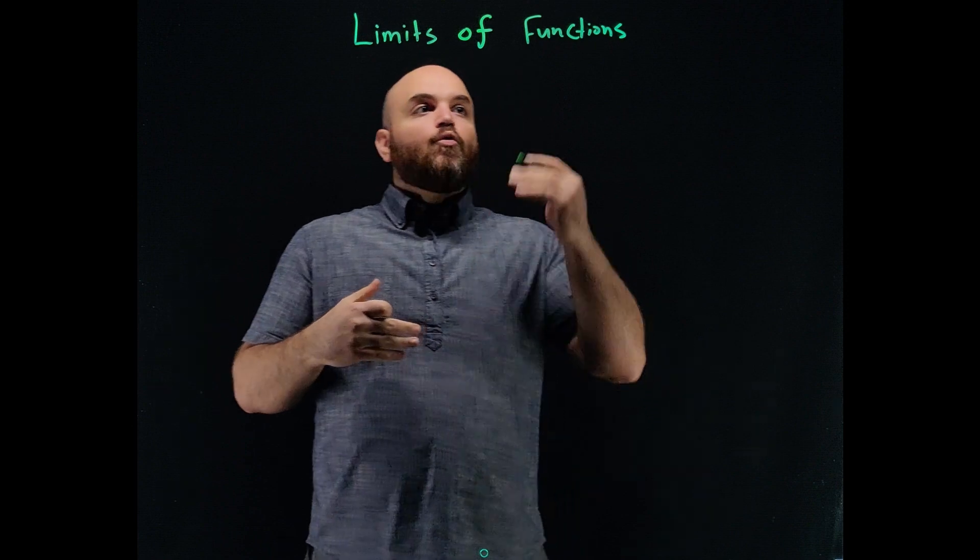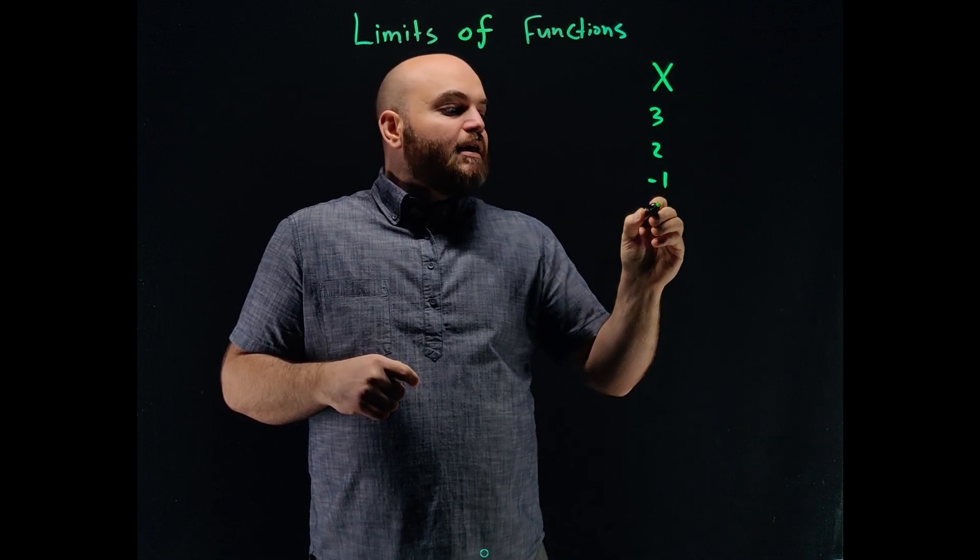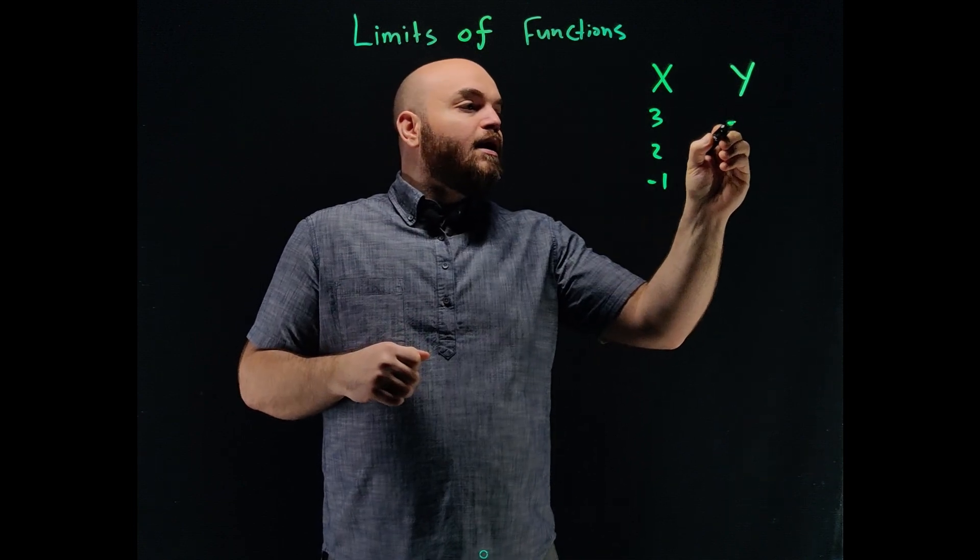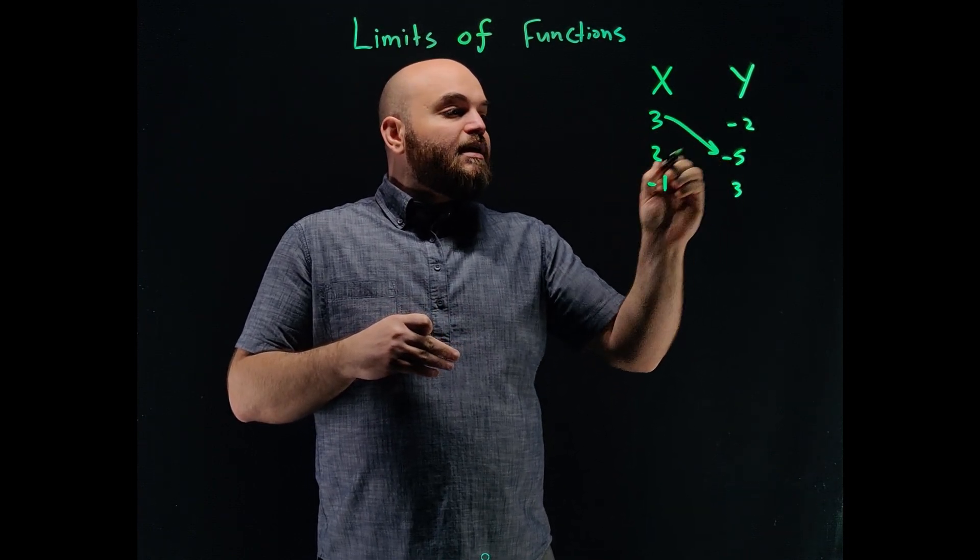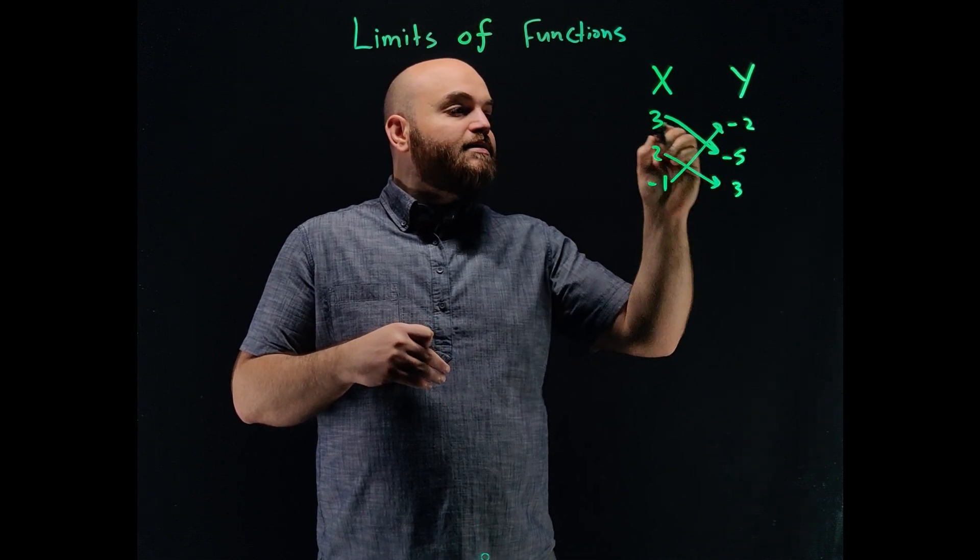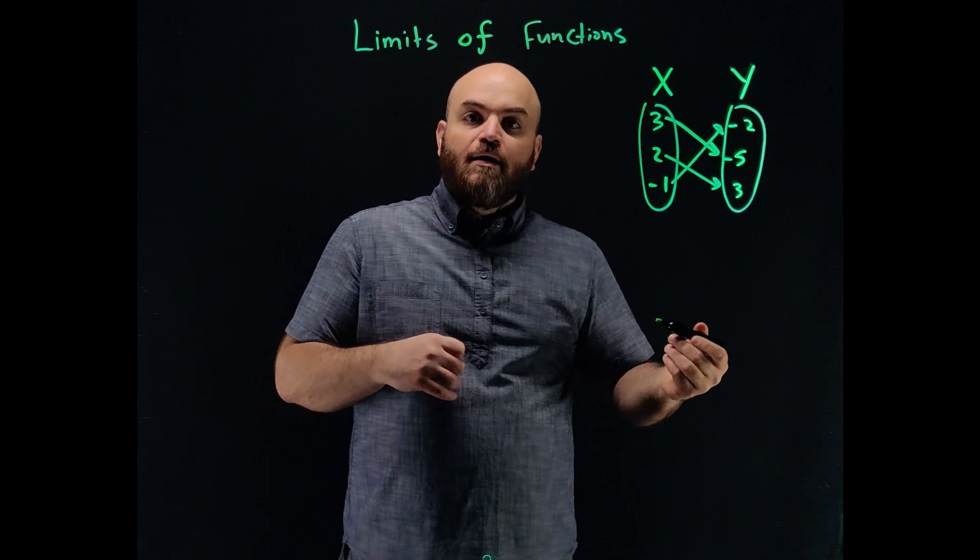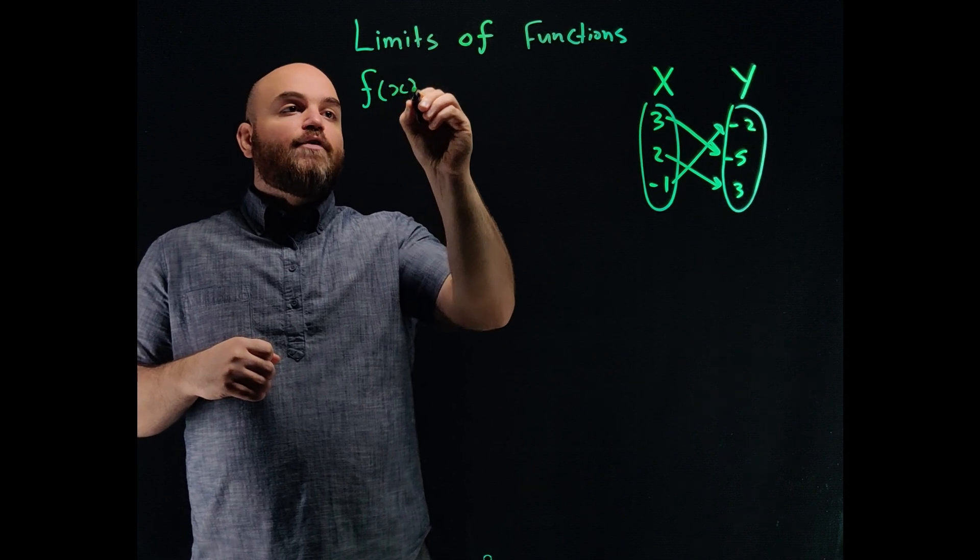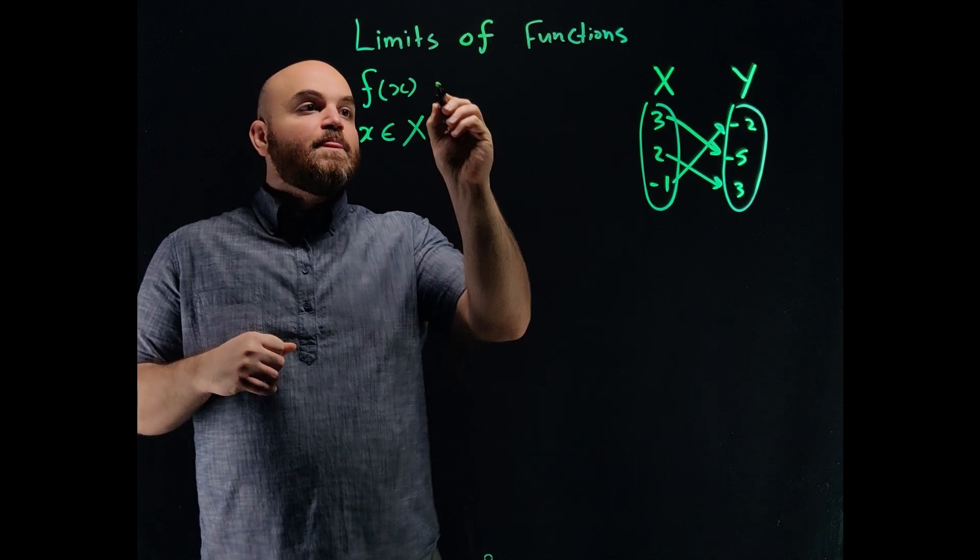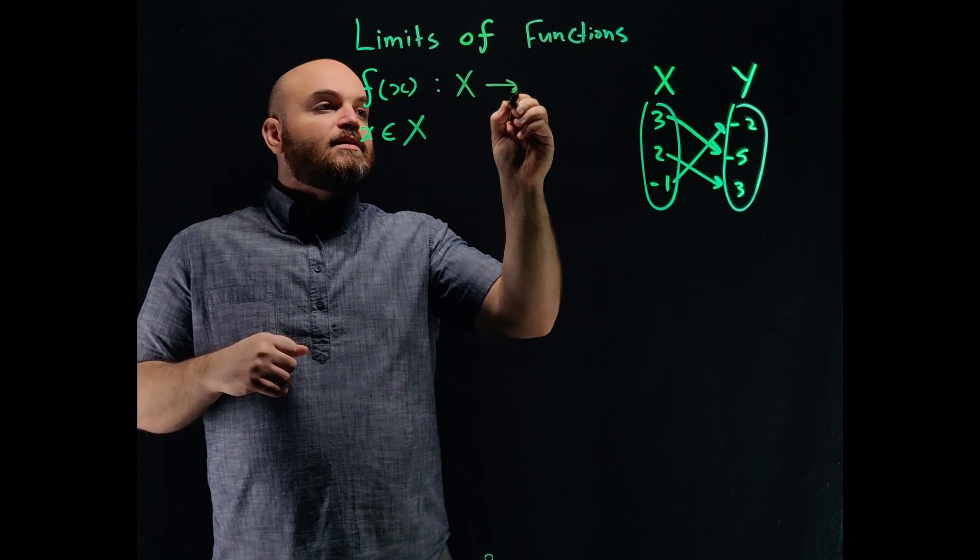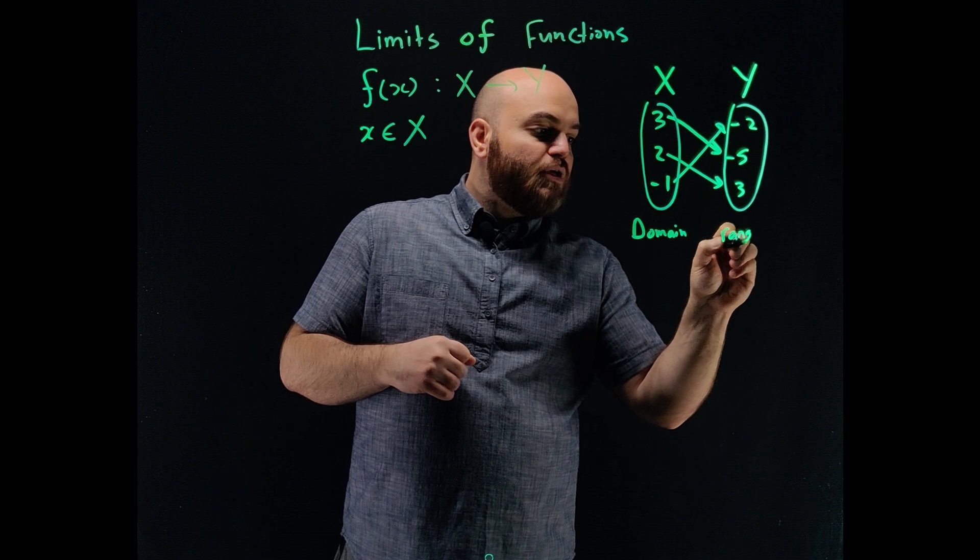Let me start by talking about what a function is. Imagine that you have a set of numbers called X, and you have another set of numbers called Y, and these numbers essentially have a relationship with each other. There's a relationship that says, given any number from set X, then I can give you the matching number for it in set Y. That's essentially what a function is. A function f of variable x, where x belongs to the set capital X, is essentially a mapping from set X to set Y.